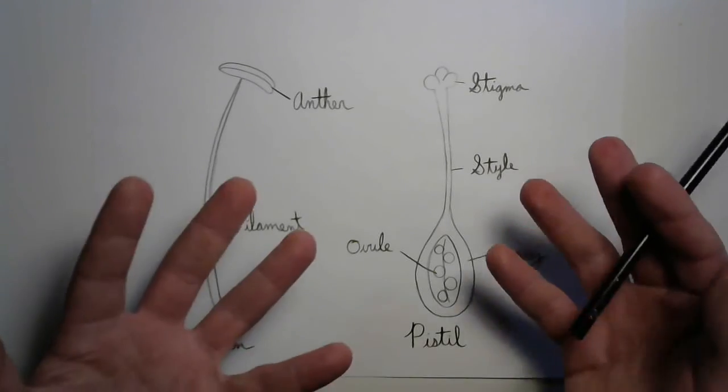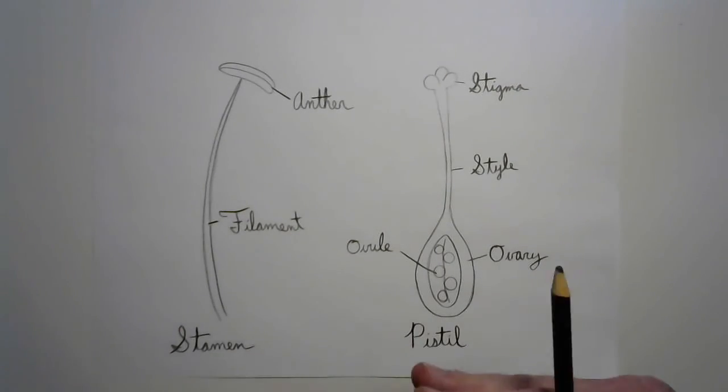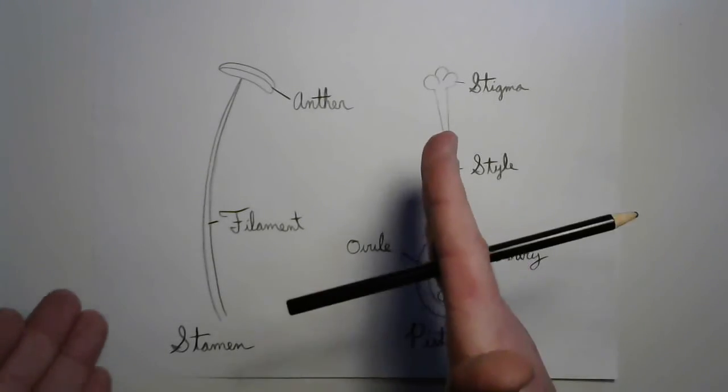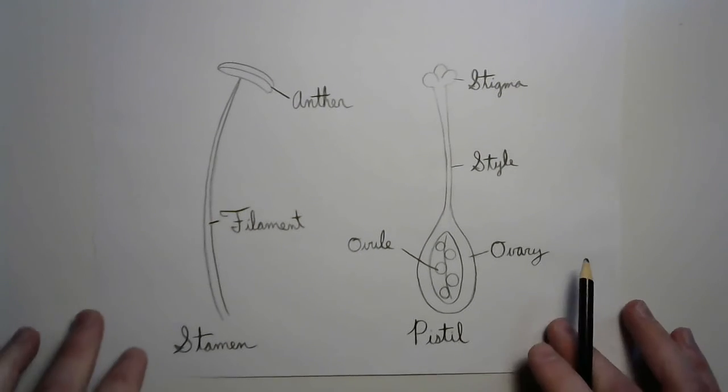And then we get juicy, delicious fruits filled with beautiful seeds that we can plant in the ground and create new plants with more beautiful flowers full of stamen and pistils that are going to make more and more plants. It's pretty amazing.